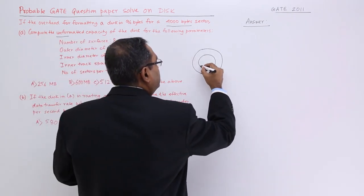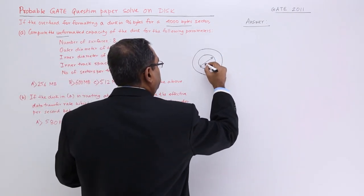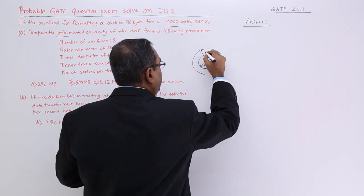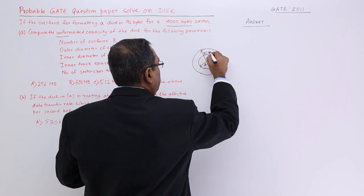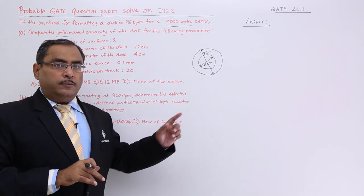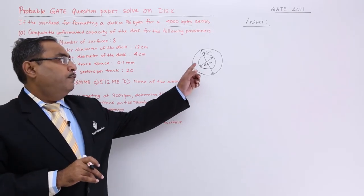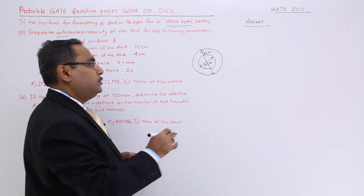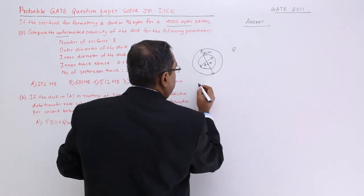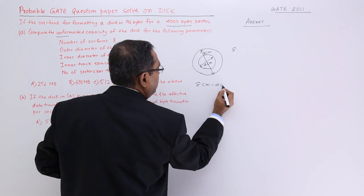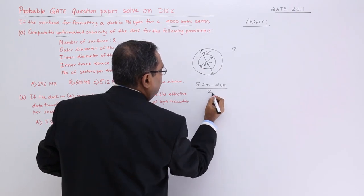The innermost track has a diameter of 4 cm and the outermost track has a diameter of 8 cm. So I'm computing 8 cm minus 4 cm divided by 2, giving 4 cm. But wait — outer diameter is 12 cm.